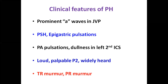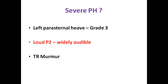Clinical features of pulmonary hypertension should be looked for especially in severe mitral stenosis and in late stages of other valvular lesions. Findings include prominent A wave in JVP, parasternal heave, epigastric pulsations, pulmonary artery pulsations, loud palpable P2 widely heard, and on auscultation TR or PR murmurs. Palpatory findings of pulmonary hypertension include parasternal heave, PA pulsations, and loud palpable augmented P2. Severe PH: left parasternal heave Grade 3, loud P2 widely audible, and a TR murmur all indicate severe pulmonary hypertension.